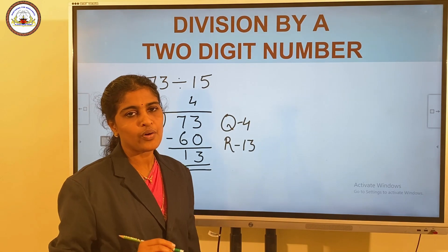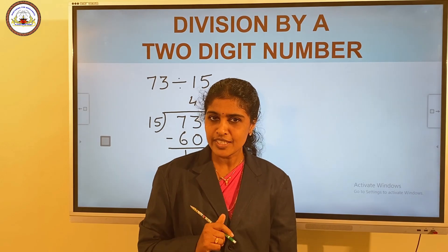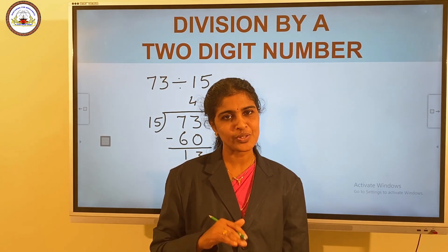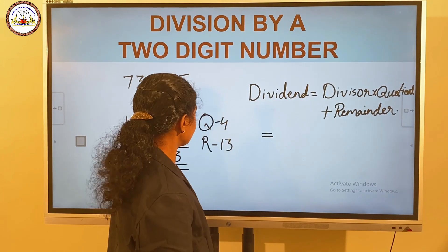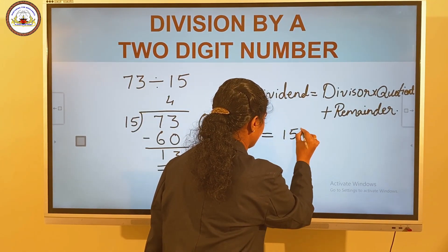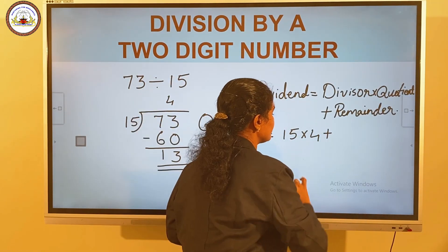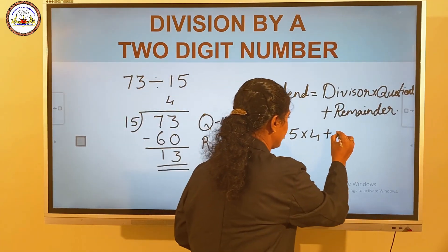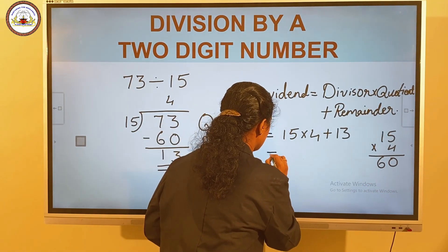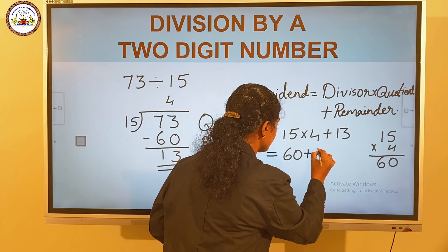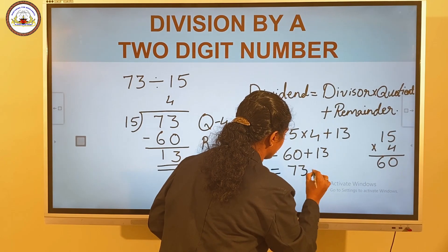Now, we can verify the answer using the division algorithm. Do you remember the division algorithm? Dividend is equal to divisor into quotient plus remainder. Here, the divisor is 15, quotient is 4, and remainder is 13. So, 15 into 4 is 60, and 60 plus 13 is 73. That is the dividend.